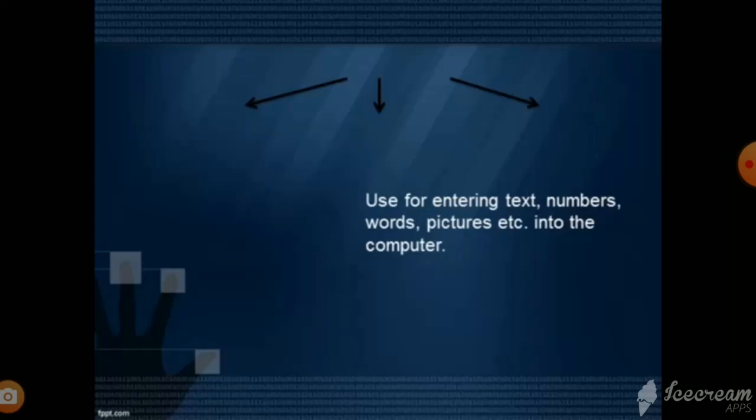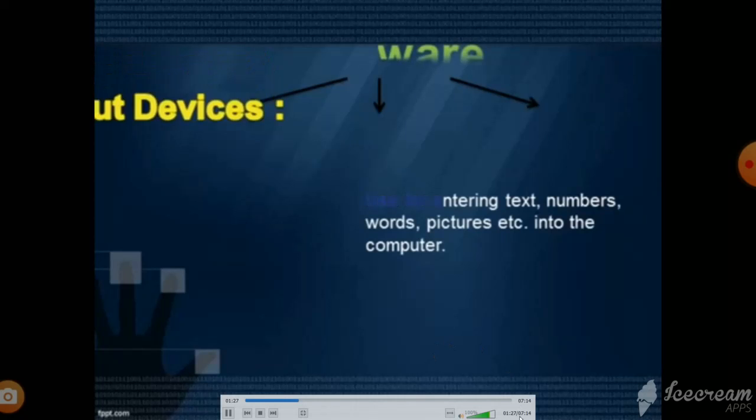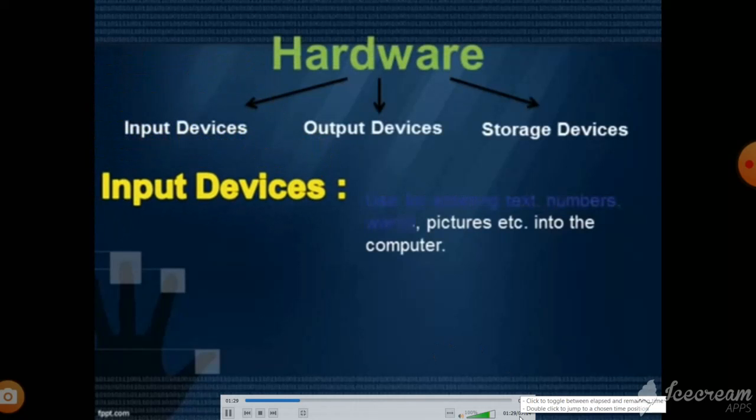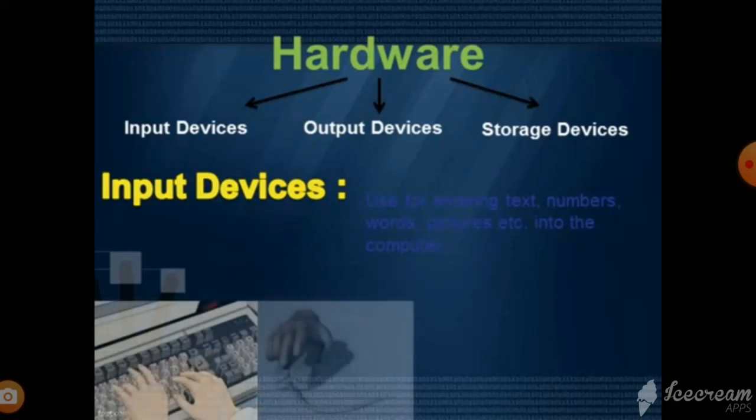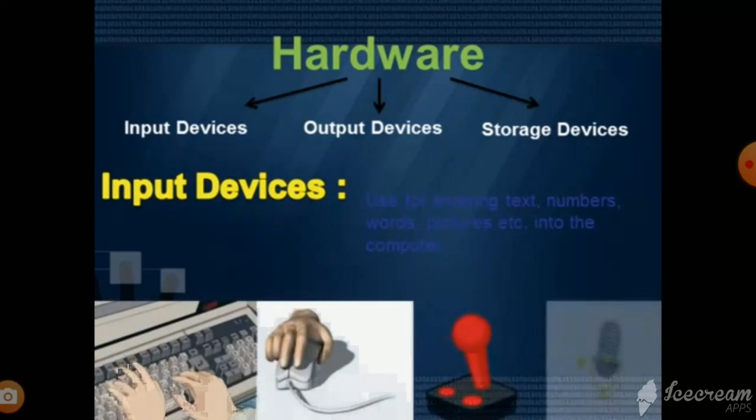Hardware of a computer is further divided into input, output, and storage devices. Input devices. These are special types of hardware devices that are used to input words, numbers, sounds, or pictures into a computer. These are called input devices. Examples: keyboard, mouse, joystick, microphone, etc.